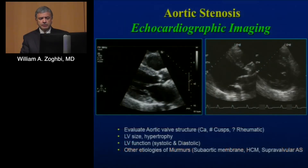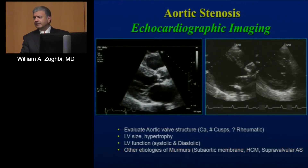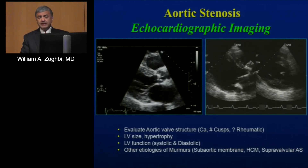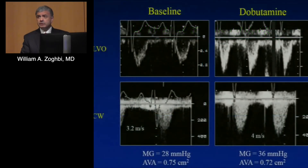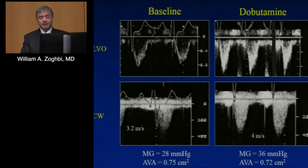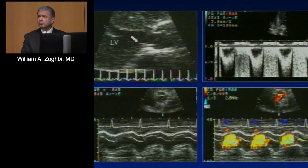For aortic stenosis, we look not only at valve area and flows, but also at the ventricle's accommodation to the pressure overload state. If you have low-flow situations, you may want to increase flow per the guideline recommendations — infuse some dobutamine, look at contractile reserve. In this example, valve area stayed tight, the gradient increased, and you feel much more comfortable that this is indeed severe aortic stenosis.